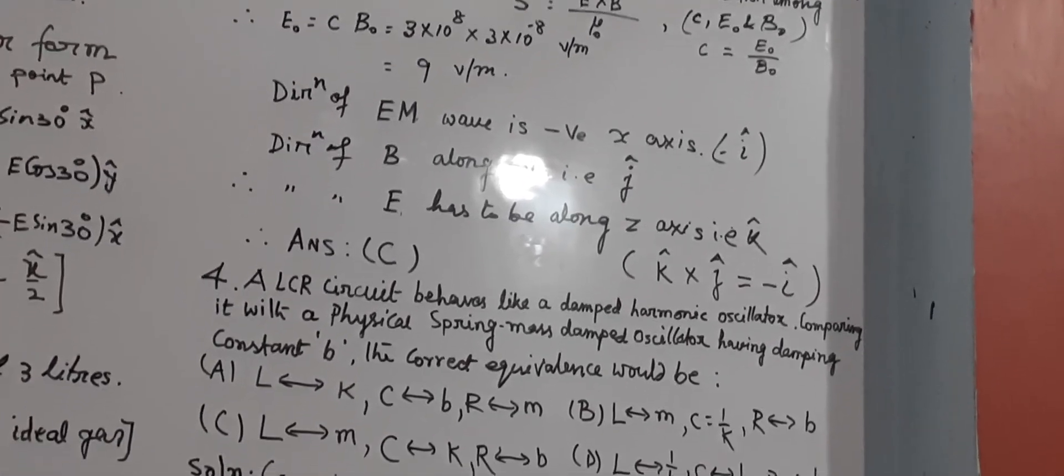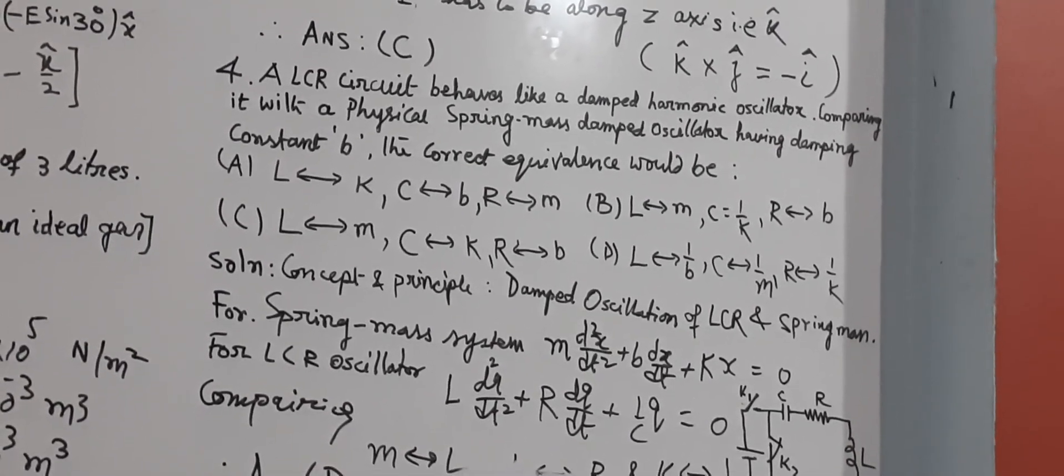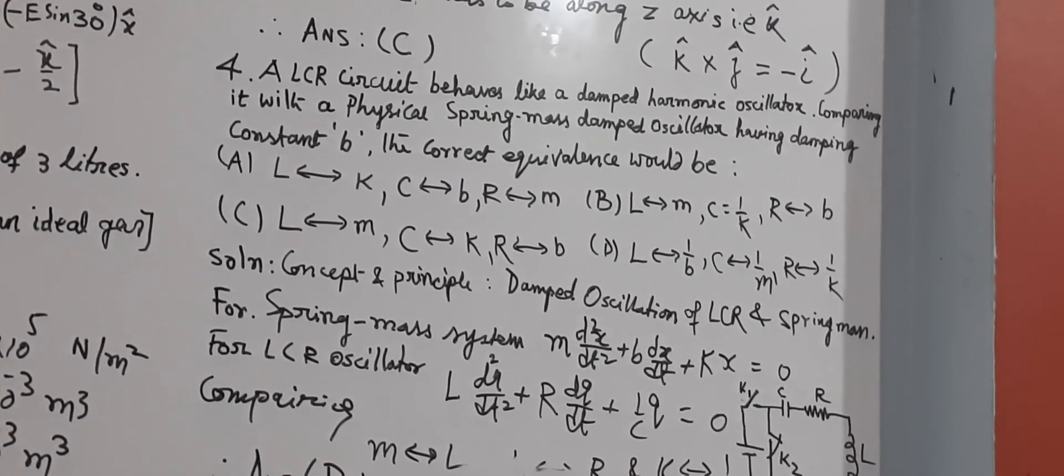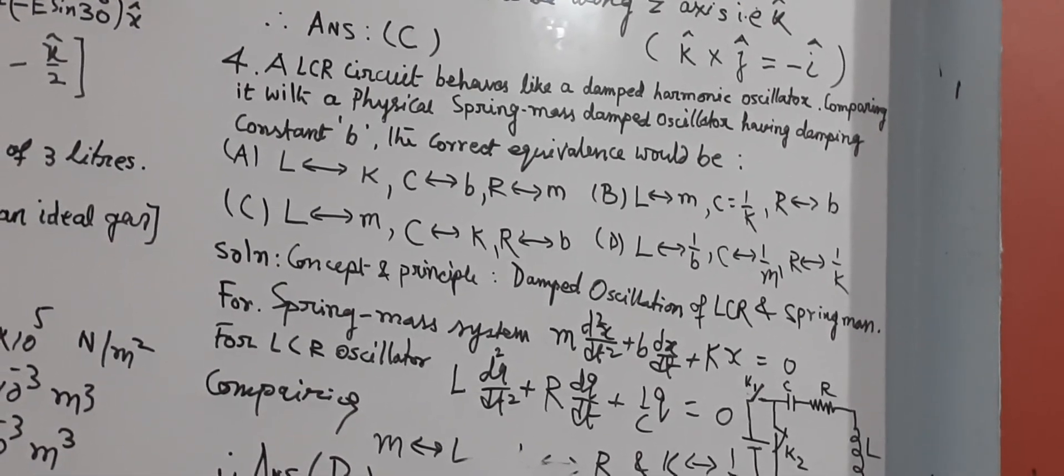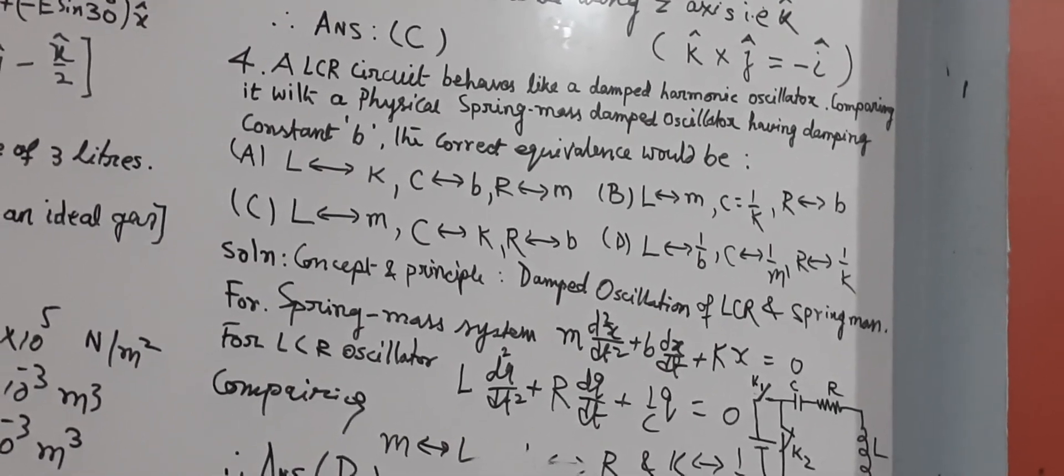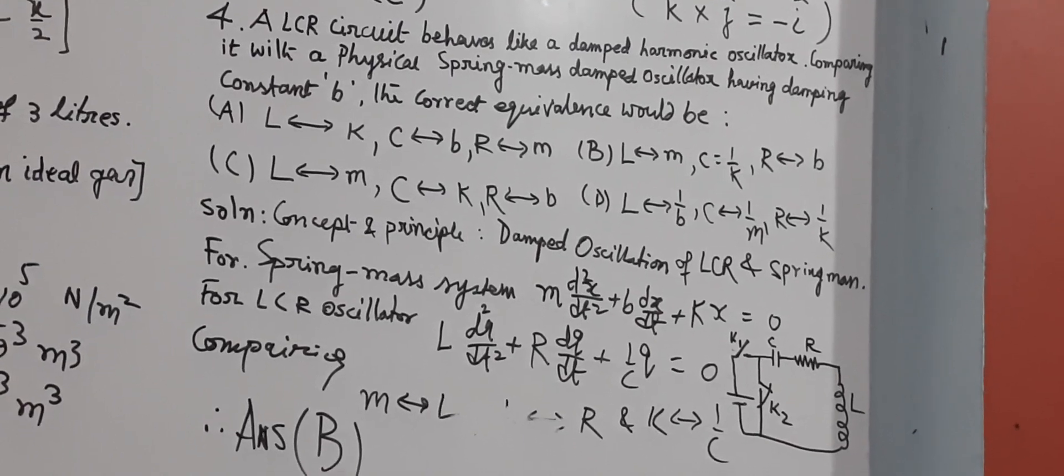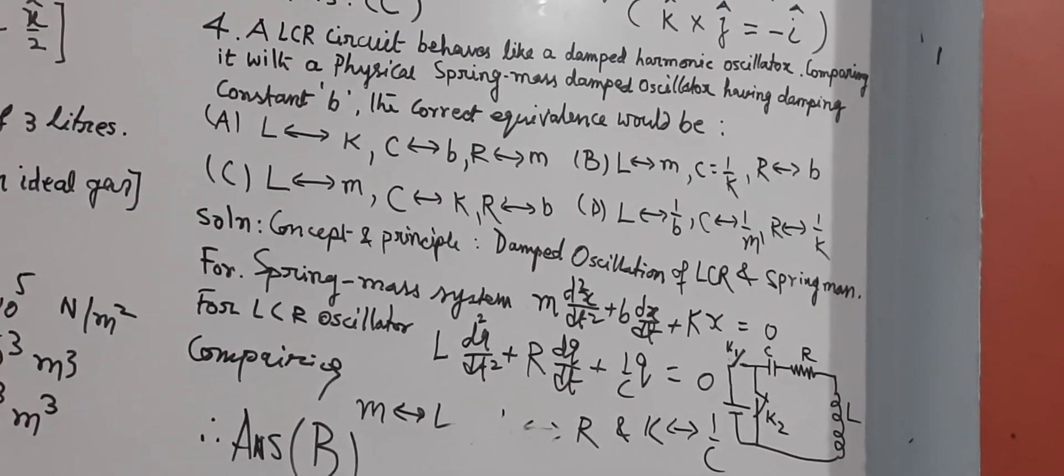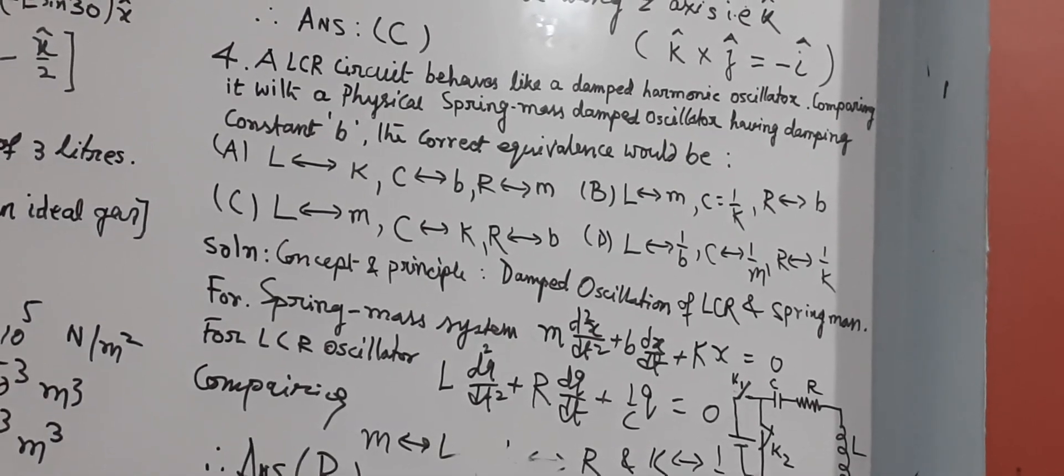Number 4, that, LCR circuit behaves like a damped harmonic oscillator, comparing it with a physical spring mass damped oscillator, having damping constant B. The correct equivalence would be, there are 4 choices, now we know that, here concept and principle involved is damped oscillation in LCR, as well as spring mass system.